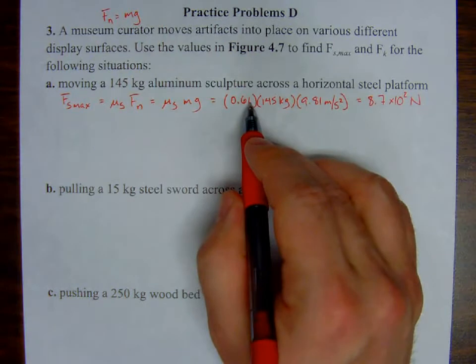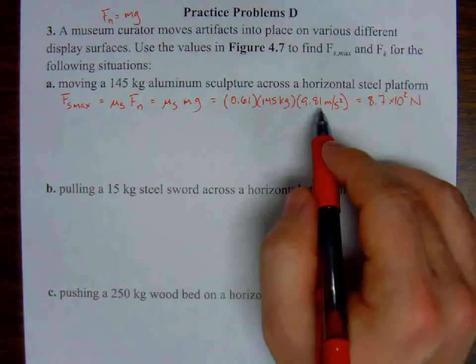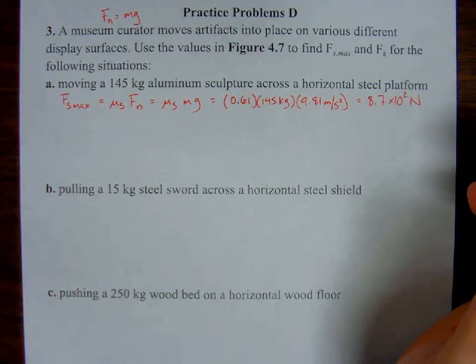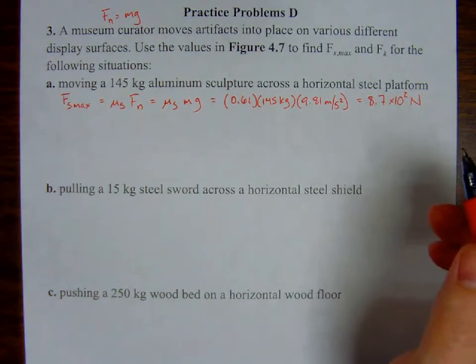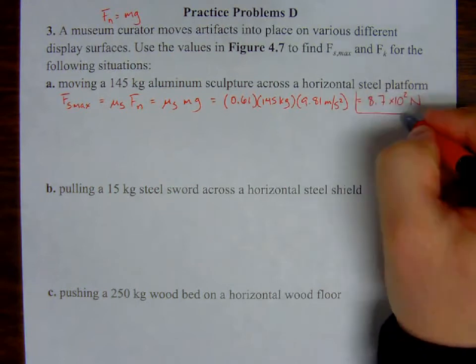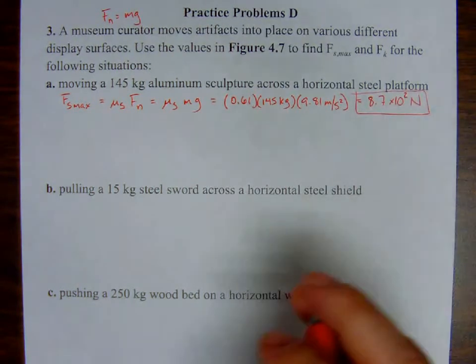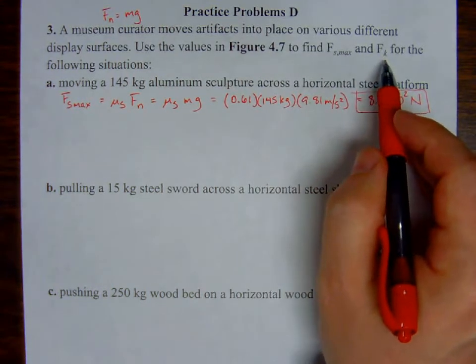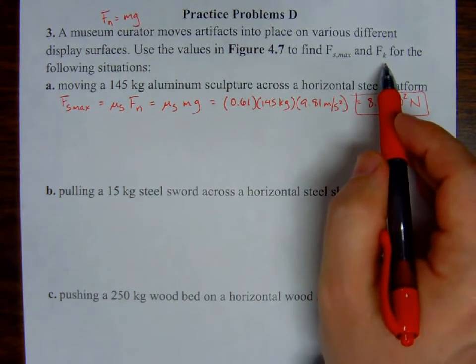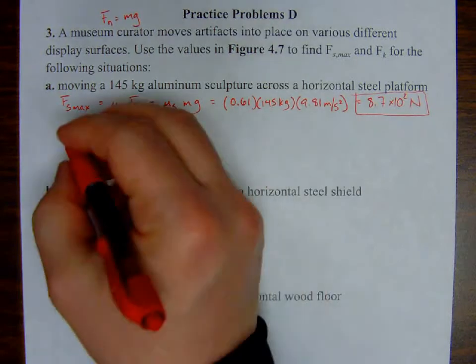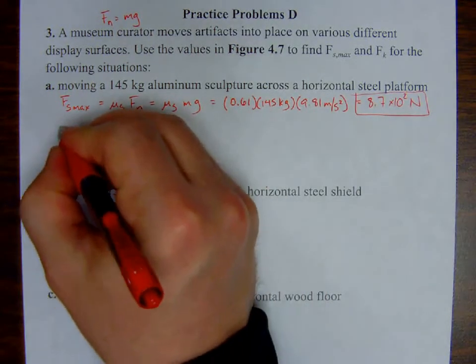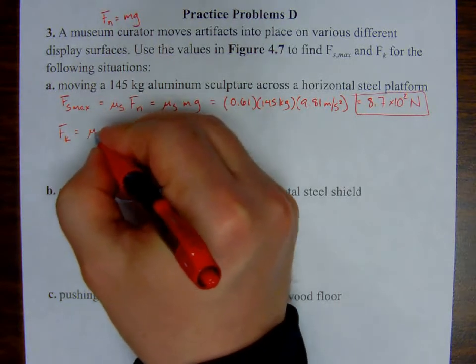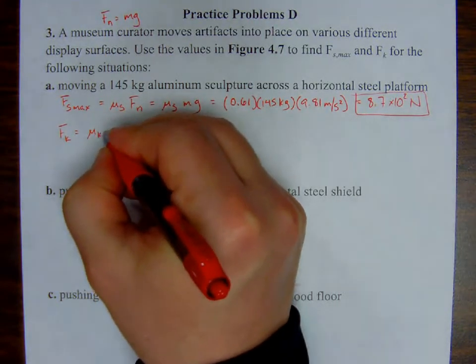So my unit is newton, now I have to do the kinetic force. So, again, it's going to be the same setup, force equal to coefficient of kinetic friction times normal force, but in the same way, it's a lot easier for me to use mg, so what I'm really going to calculate with is coefficient of kinetic friction times mass times acceleration due to gravity.